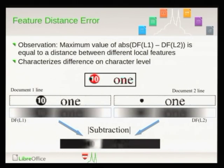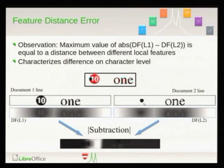Most of these error measures are quite simple and intuitive, but the Feature Distance Error maybe not. It's about this case: we have a bulleted list rendered in two applications. The correct bullet is one style, but in some application a different bullet style is rendered instead. So how do we find this difference automatically?